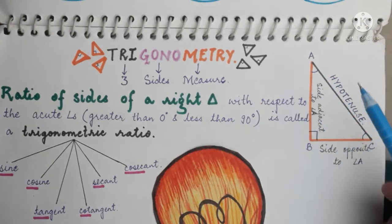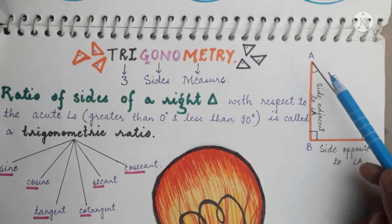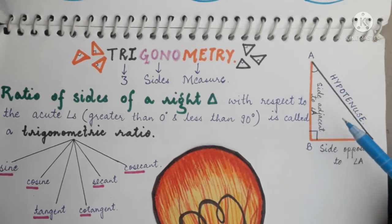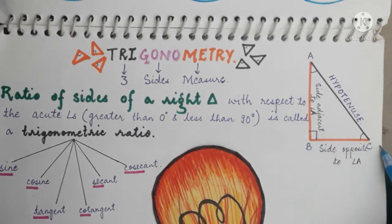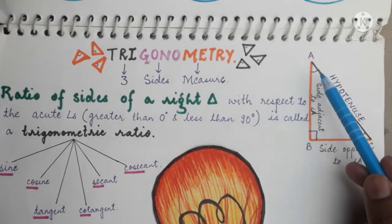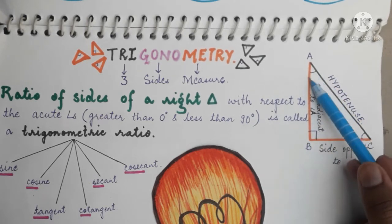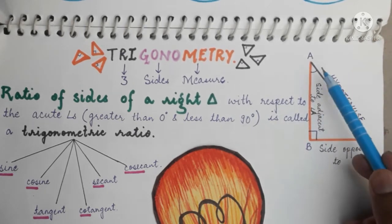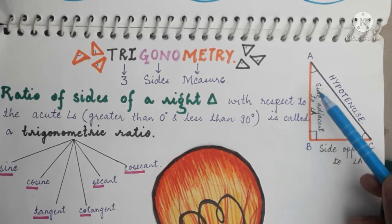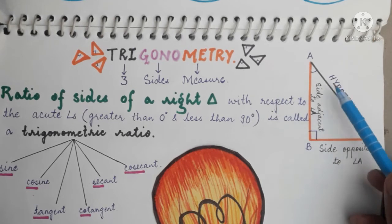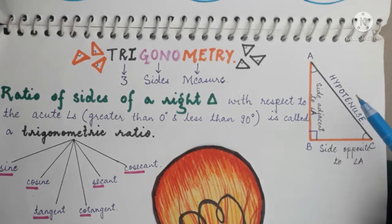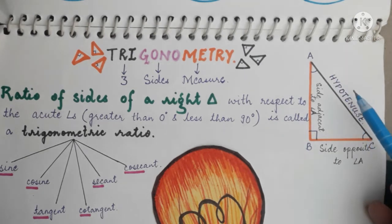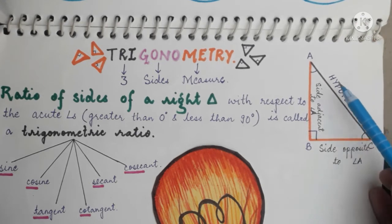In this right triangle ABC, let us consider the acute angle A. The side opposite to angle A is BC. The side adjacent to angle A is AB. 'Adjacent' means next to. Now, the hypotenuse is also next to angle A, but we always take the side other than the hypotenuse as the side adjacent to angle A. So AB is the side adjacent to angle A, BC is the side opposite to angle A, and AC is the hypotenuse.